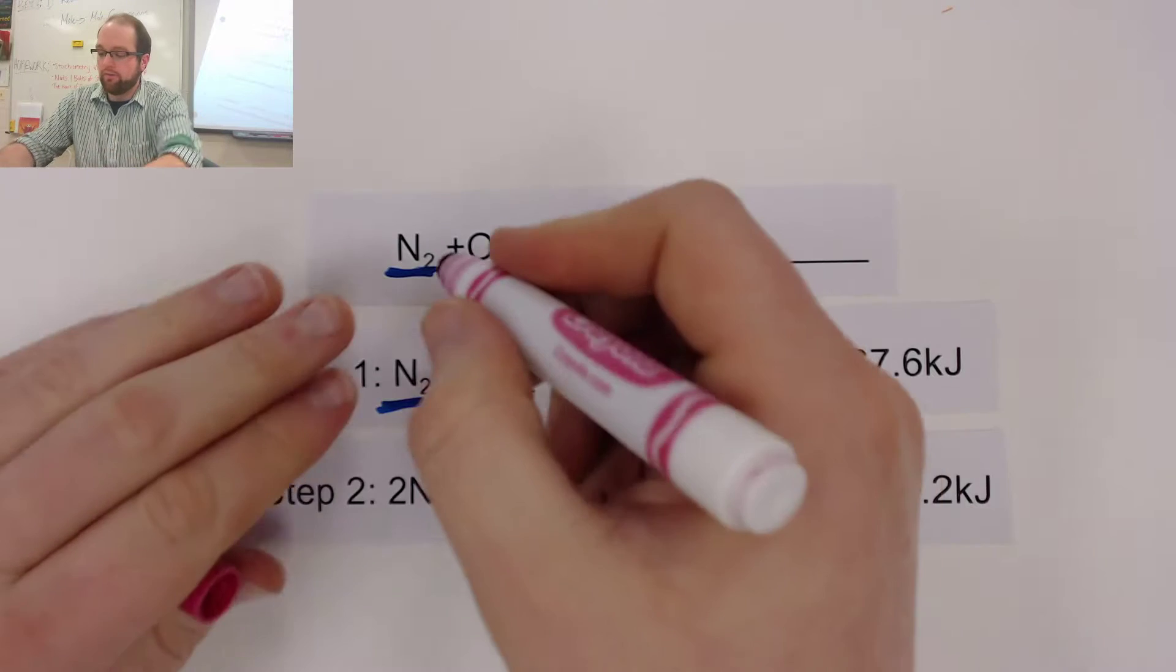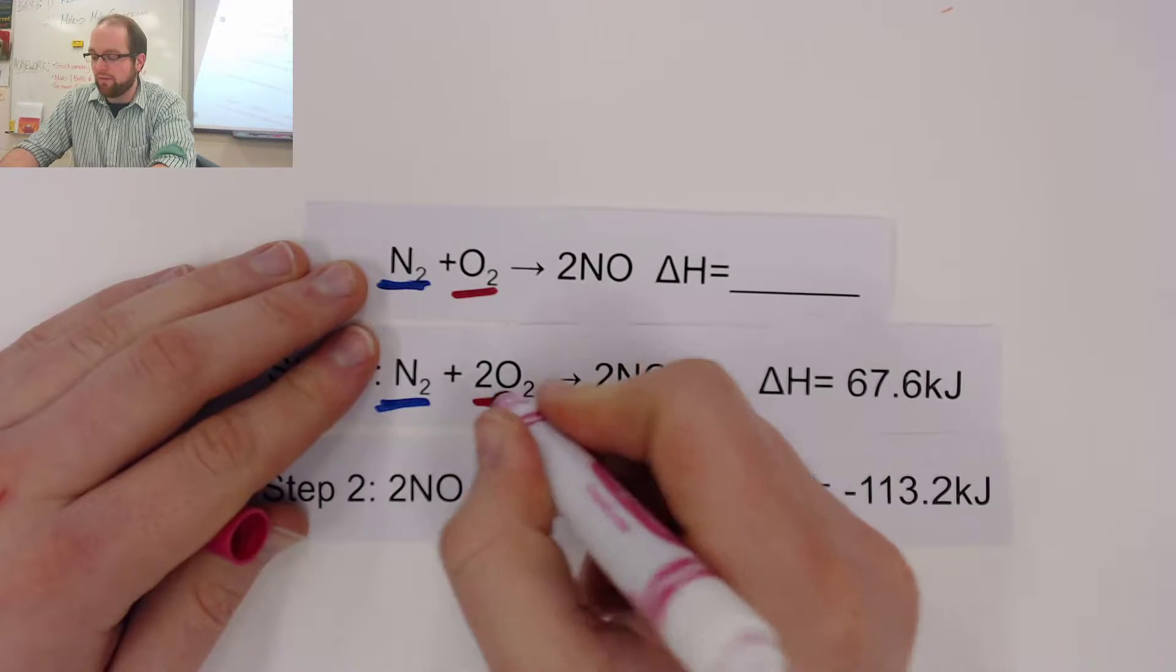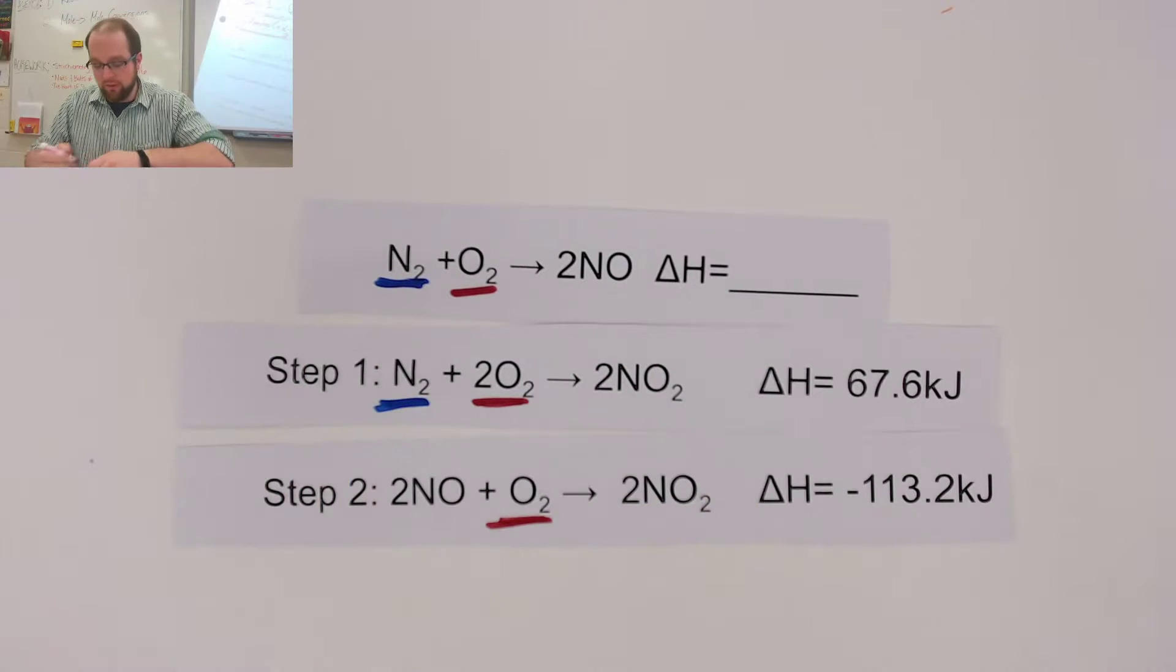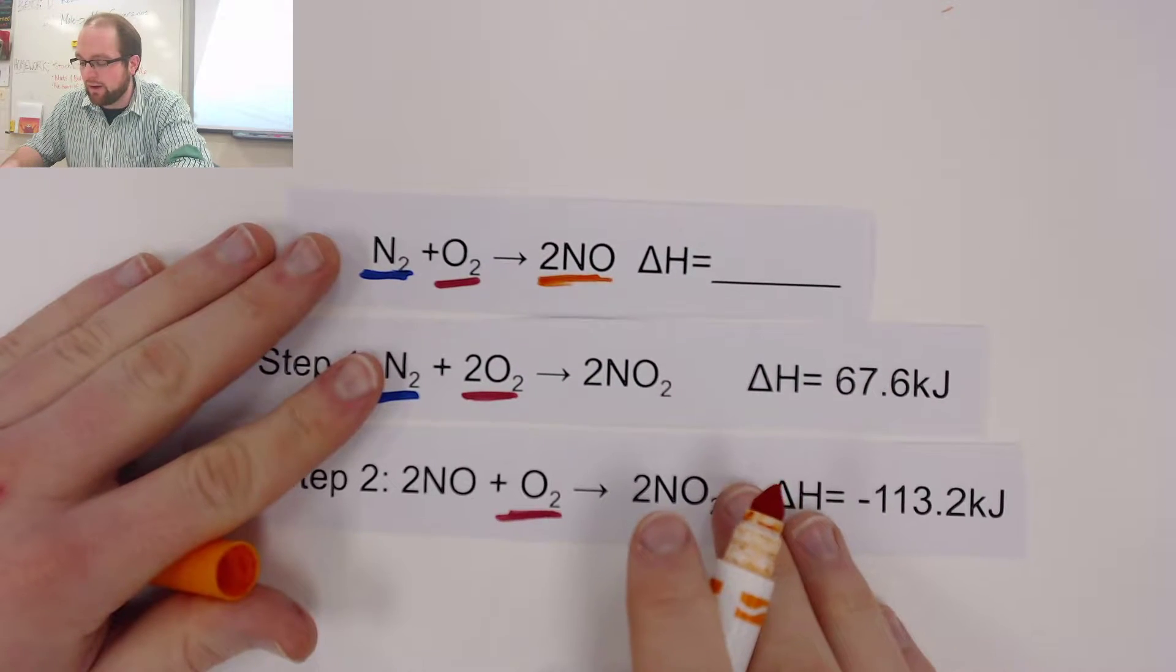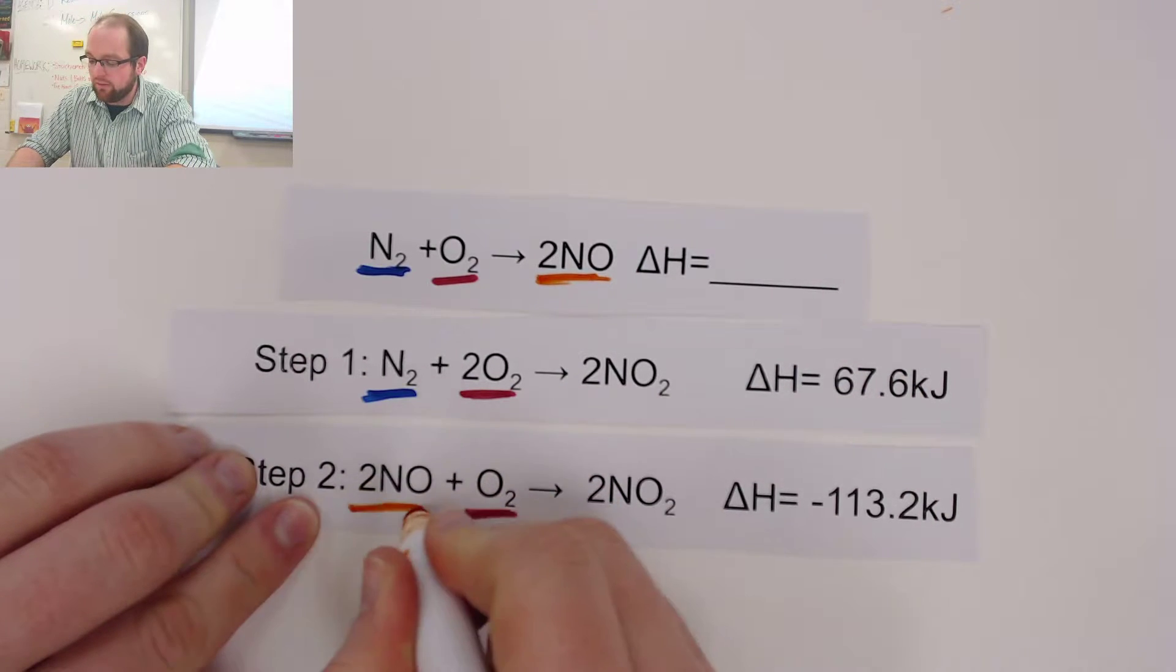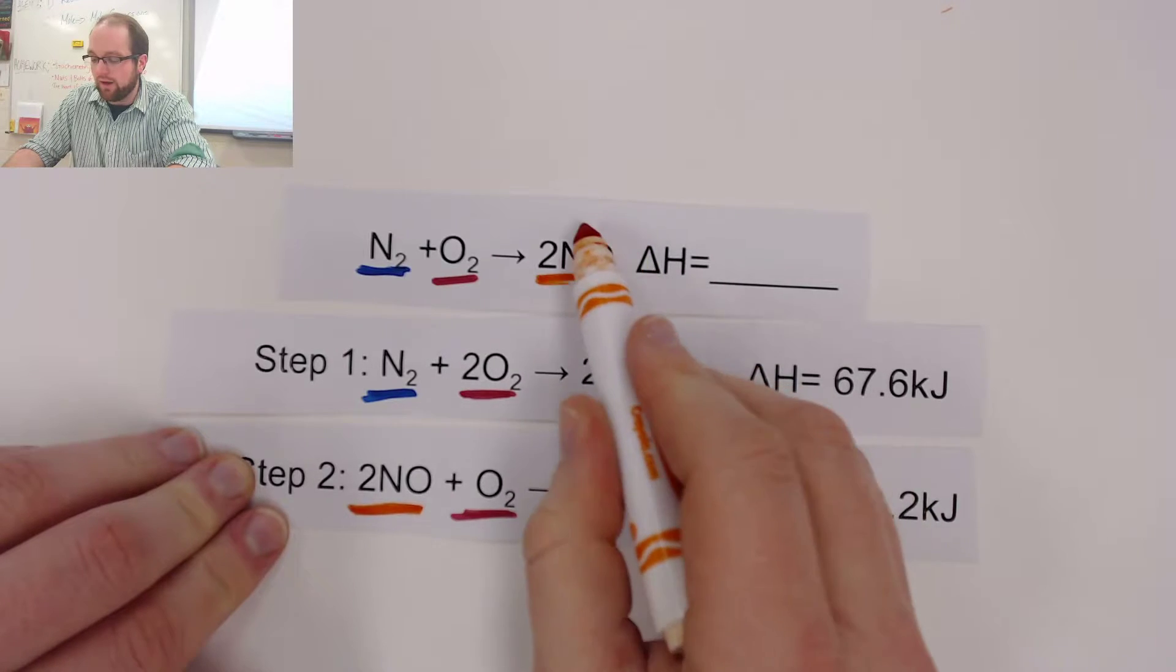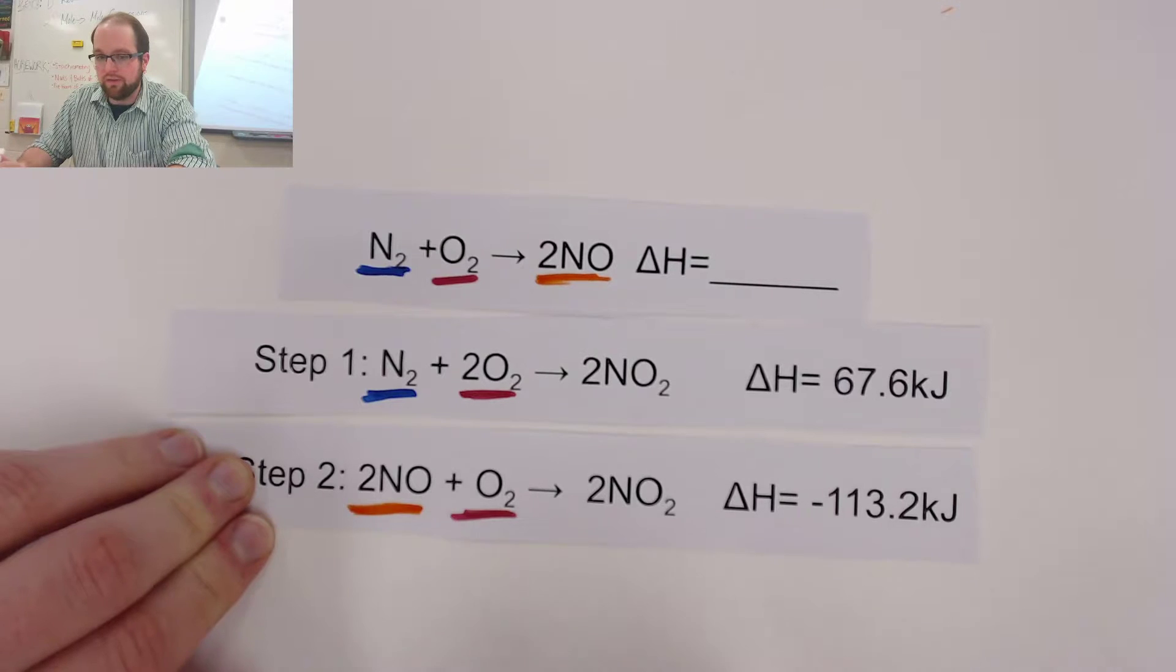When I go to look for oxygens, though, things get a little bit trickier because they're not just in step two, or not just in step one, but they are also in step two. So we're going to have to think carefully about those as we're going through them. And then the last product that I'm interested in here is the nitrogen monoxide. And this is where I start to get my first big clue that nitrogen monoxide is a product in our overall reaction, but is only a reactant in its second step.